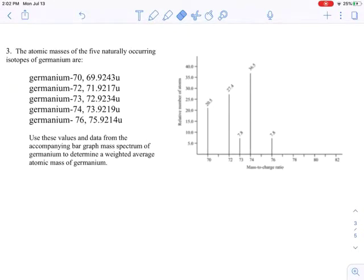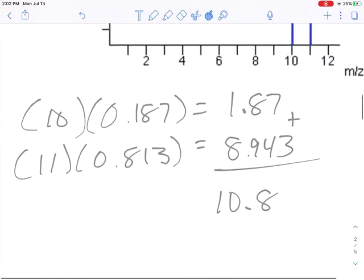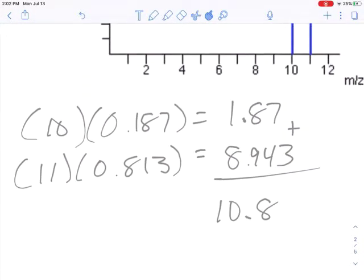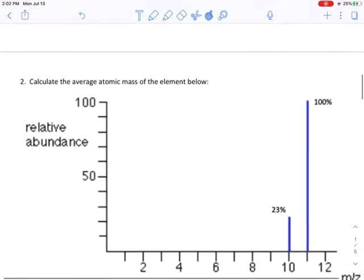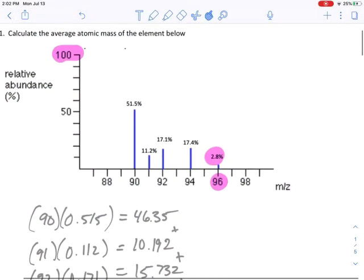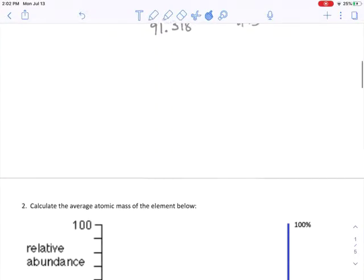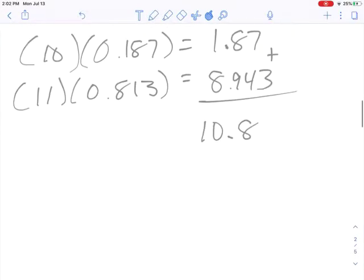Now, there was one slight wrinkle here that we left off of the other ones. In the other ones, we just kept it to nice, even whole numbers. Isotope 10 has a mass of 10, isotope 11 has a mass of 11. Each of these isotopes were 90, 91, 92, nice whole numbers. In reality, they don't have those masses.